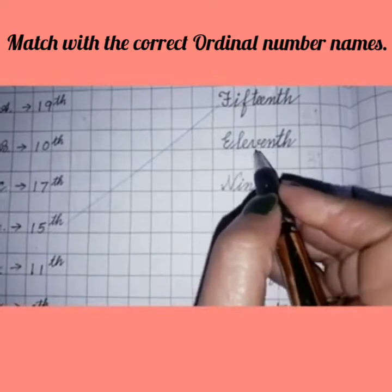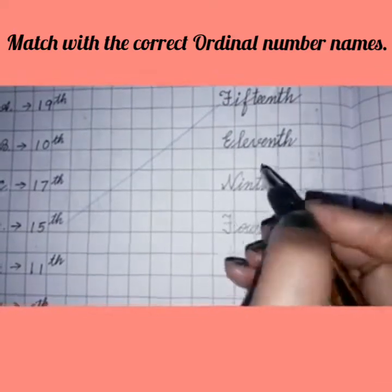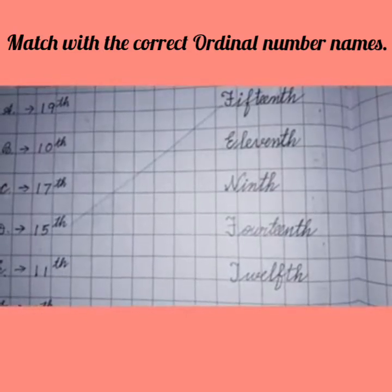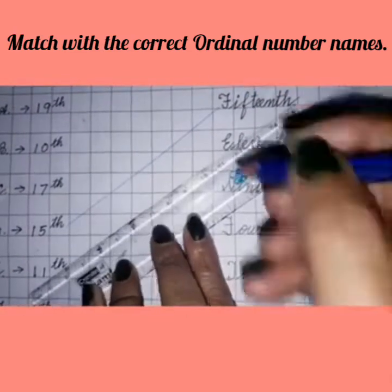Then next you will write E-L-E-V-E-N-T-H 11th. So where is 11th in this row? This is 11th. After writing 11th, you will match it with this number.